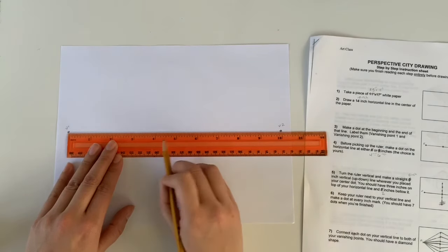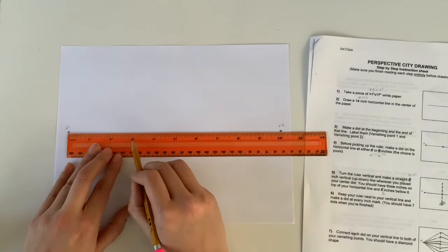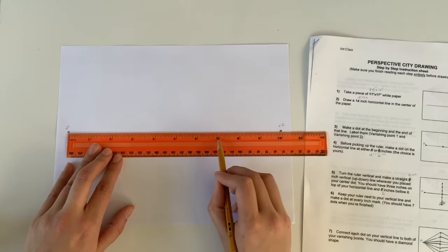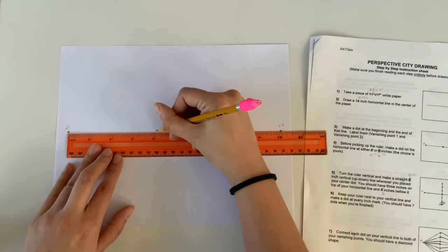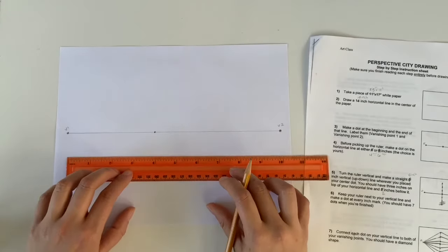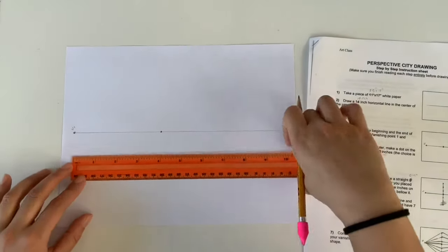My next step is to decide where I want that center of my block to be. I like to not put it dead center because that makes it a little boring so I'm going to move a little over to the left. I'm going to do mine at the four inch mark. So right now I have three dots and one line.